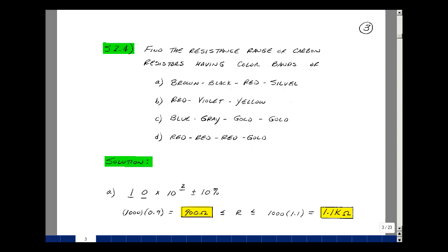Let's find the nominal value of the resistance and also the range of resistance. Now looking back in the notes in Chapter 2 on page 5 you'll find the color code.